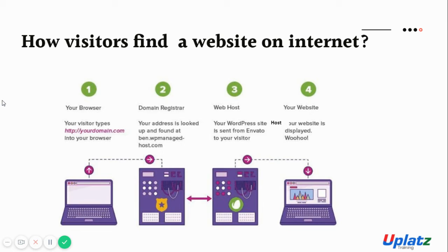This is the mechanism behind it — it looks pretty simple but there are many things involved. Looking at this diagram, you can see that browser, domain, and host are very important. These three things together give the user the experience of your website. The fourth part is about how you create it and on which platform you build it — but apart from that, the first three are about how the website is retrieved and shown to the visitor.